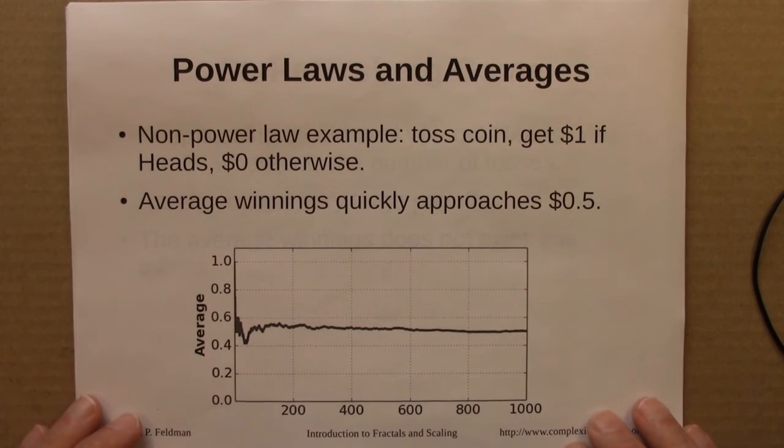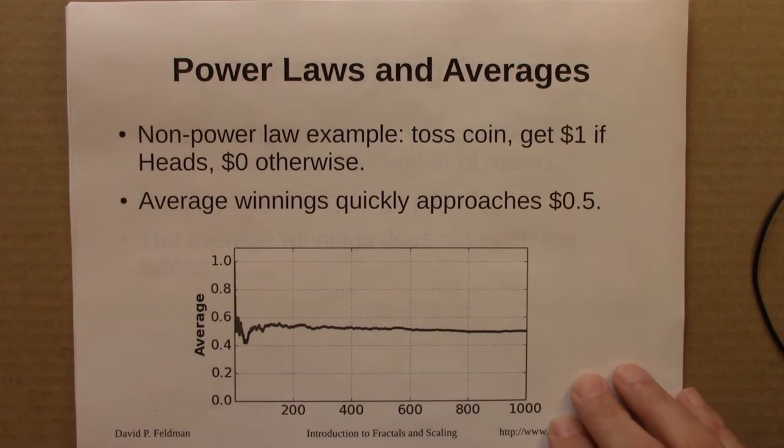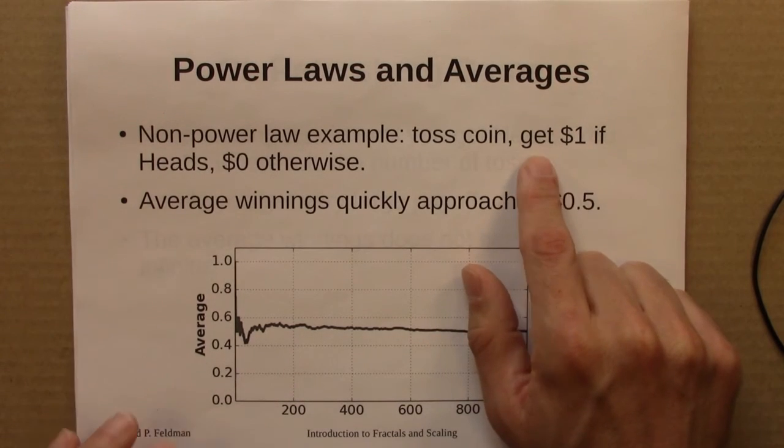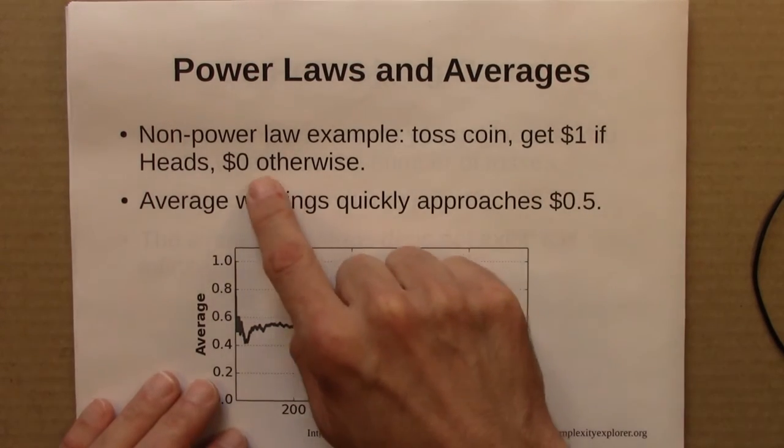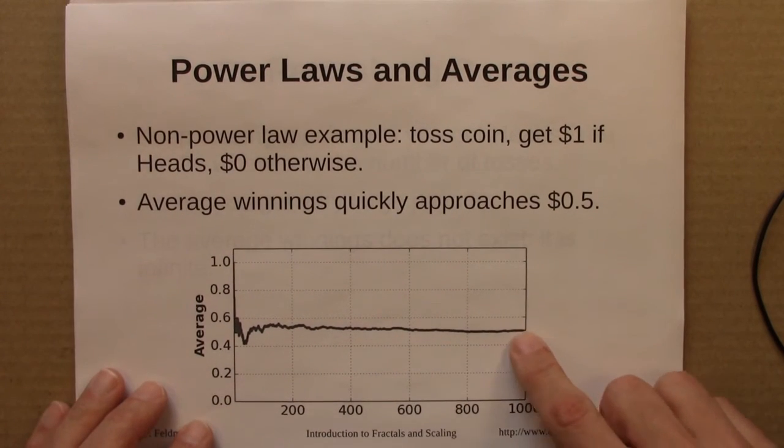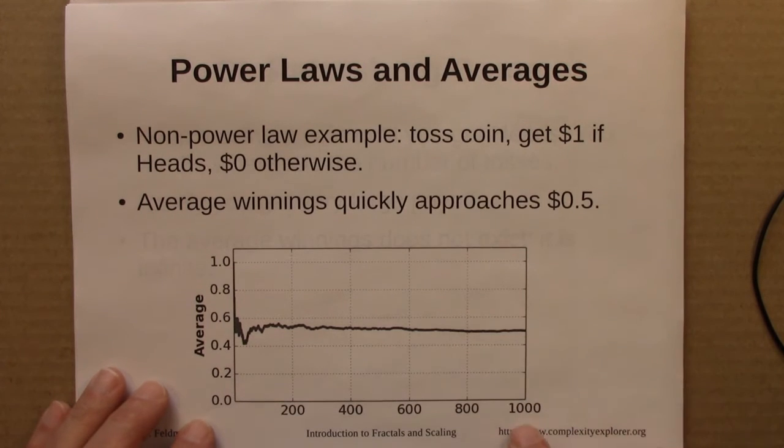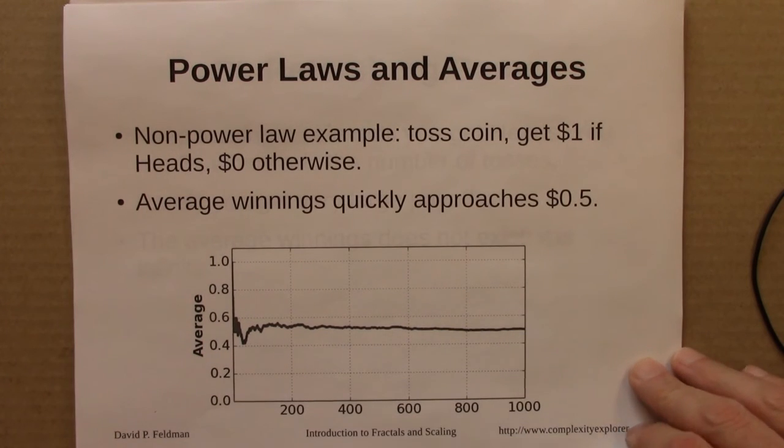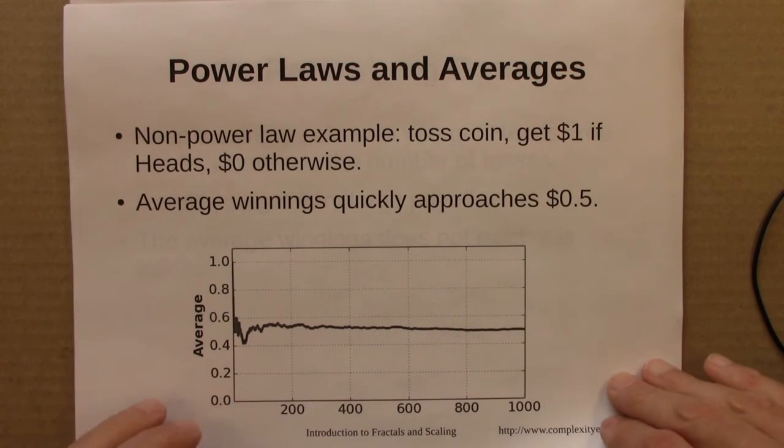Okay, so then the last set of things we talked about was power laws and averages. It turns out that power laws sometimes don't possess average properties, which seems like a weird thing, and so I try to motivate this with a couple of examples. So first, a non-power law example. We toss a coin, some sort of game, and you get a dollar if it's heads, zero if it's tails. Your average winnings in this game would very quickly approach a half. So here I'm imagining playing it a thousand times, here's the average, and it's almost exactly a half. And the fluctuations about the average get smaller.